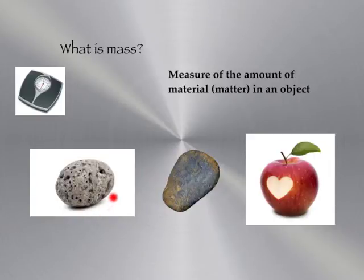This first rock here has many air holes in it. It's the same size as the second rock, but it may have a different mass, because some of the space may be taken up with the air holes. This here is a very thick rock. It will probably have a larger mass than the first rock. The apple is the same size as both rocks, but it may also have a different mass. So mass is the measure of the amount of material of an object.